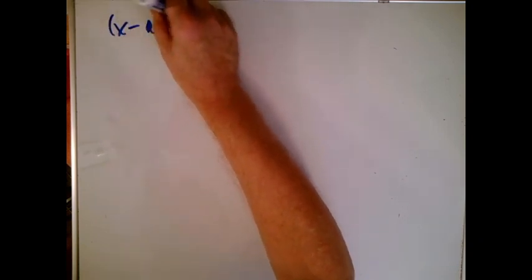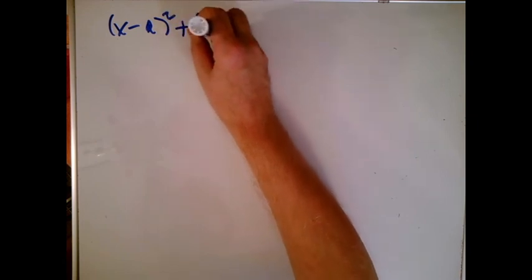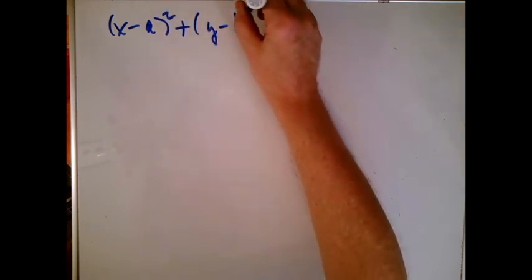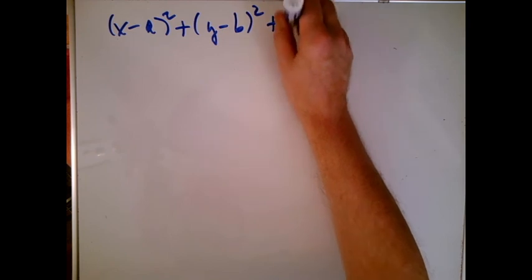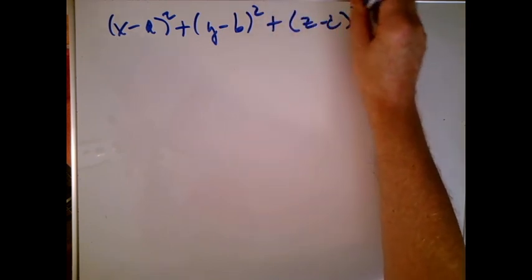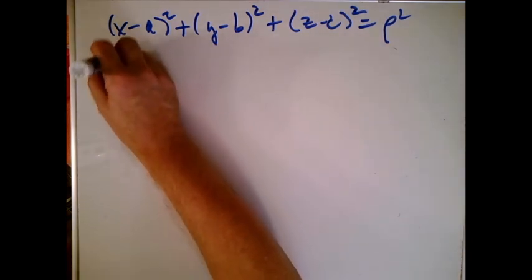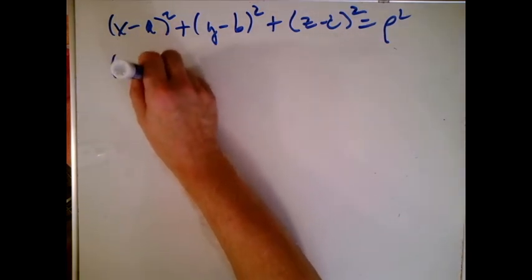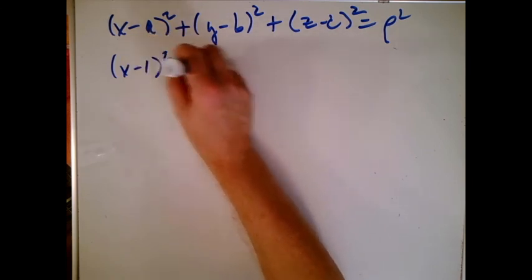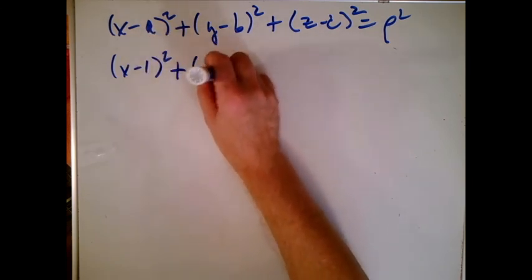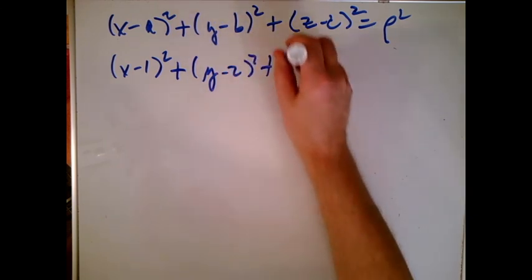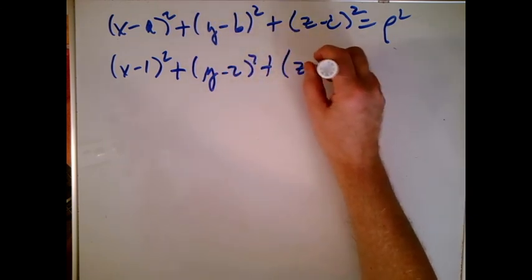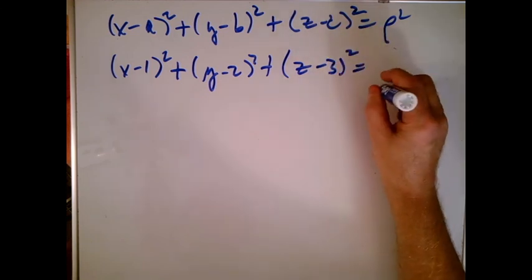Remember, we're looking for the equation of a sphere. So I know I have to have the center. I know I have to have the radius. So I know I'm starting like this. They told me the center was 1, 2, 3. So this gets very much simpler. Y minus 2 quantity squared plus Z minus 3 quantity squared. And that's rho squared.